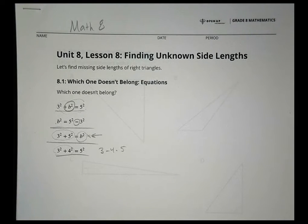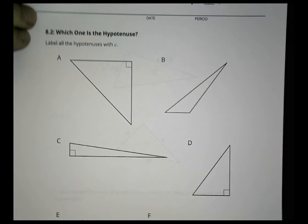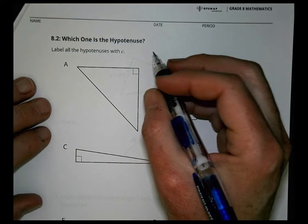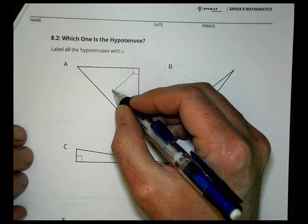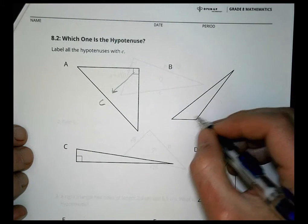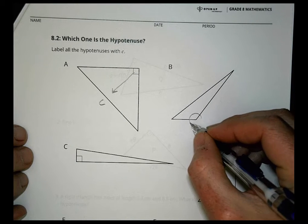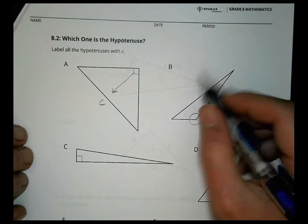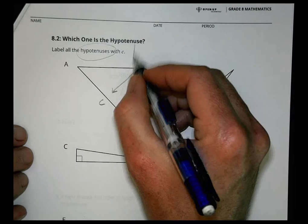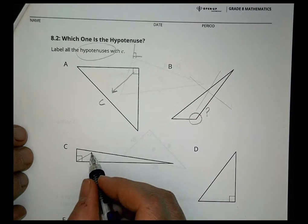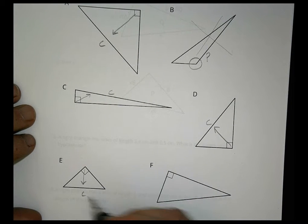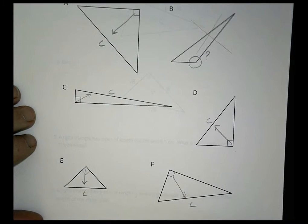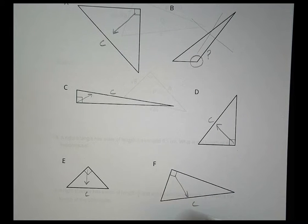This one uses the common 3-4-5 triangle. It's more about what do you notice and wonder. For the first activity, we want to label all hypotenuses with the letter c. When working with right triangles, I look at the right angle and draw an arrow across — that's my hypotenuse. The one across from the right angle is c. For triangle b, I notice it's not a right angle, so there's no hypotenuse. For c, d, e, and f, we go straight across to label each hypotenuse as c.